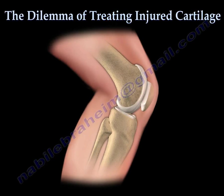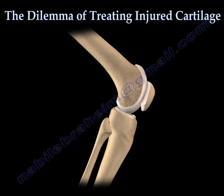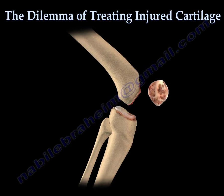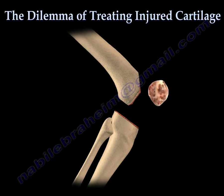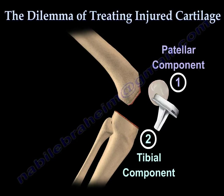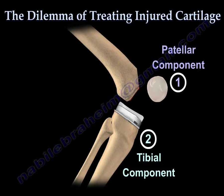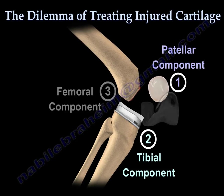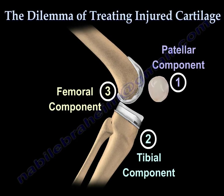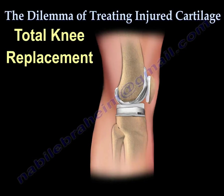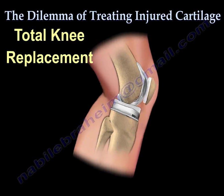Many different types of designs and materials are currently used in total knee replacement surgery. Nearly all consist of three components: a patella component which consists of durable plastic; a tibial component made of a durable plastic cushion often held within a metal platform; and the femoral component which is usually made of highly polished metal. Total knee replacement is the most predictable option to treat severe arthritis of the knee joint.